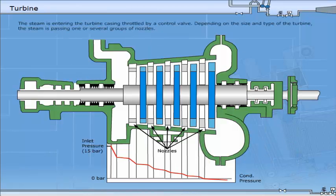The steam is entering the turbine casing, throttled by a control valve. Depending on the size and type of the turbine, the steam is passing one or several groups of nozzles.